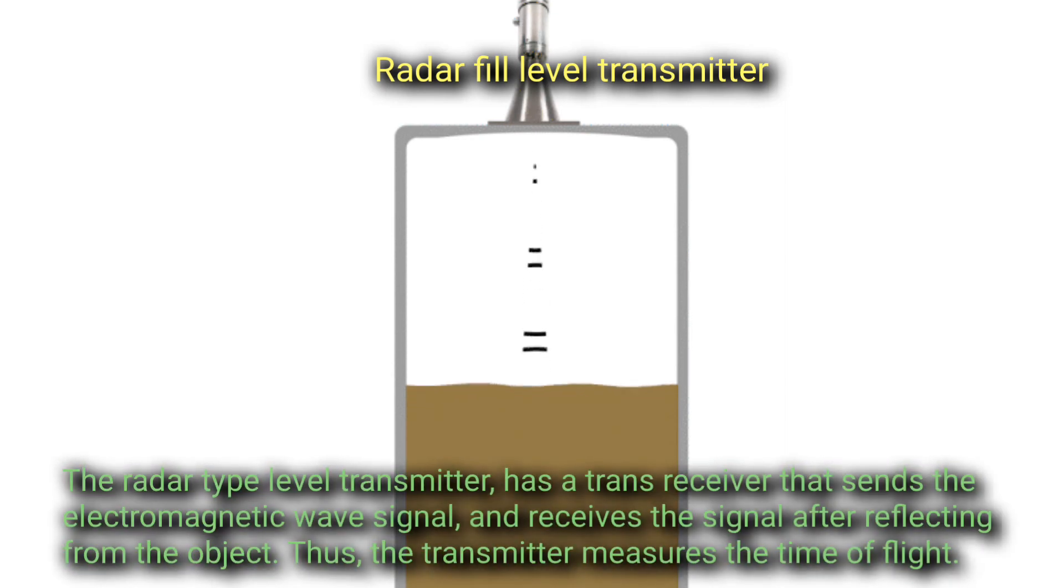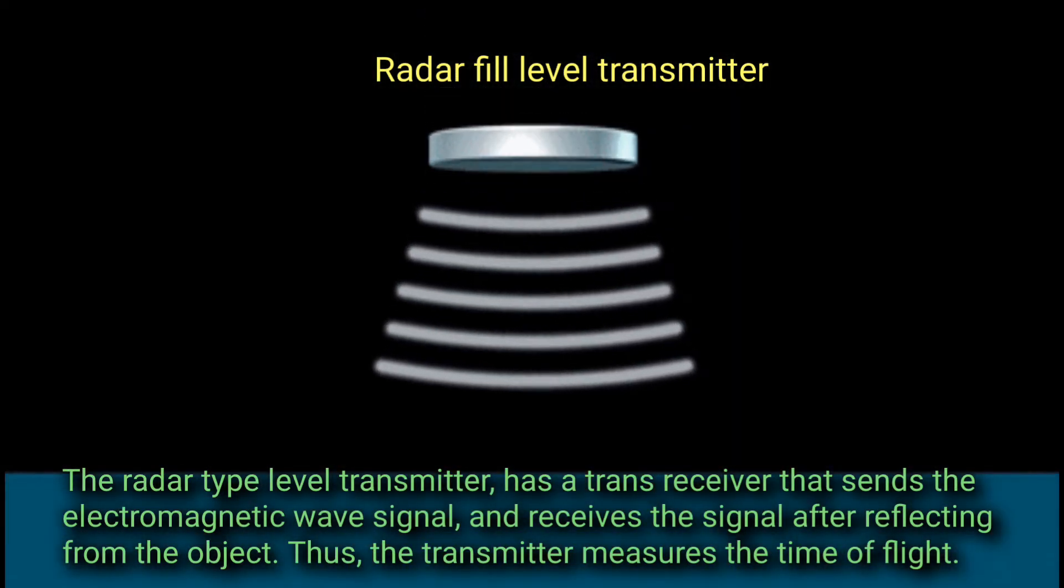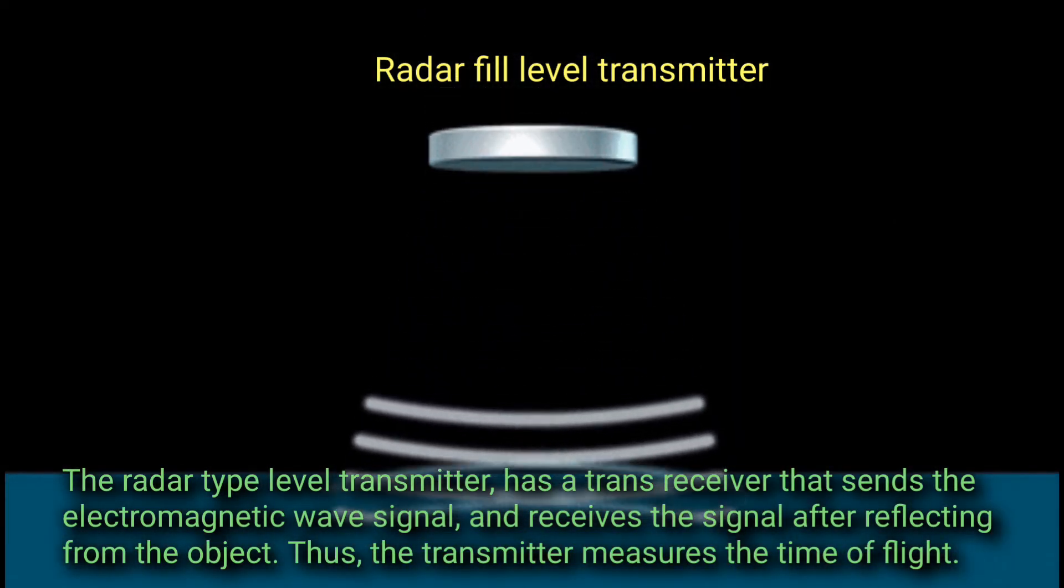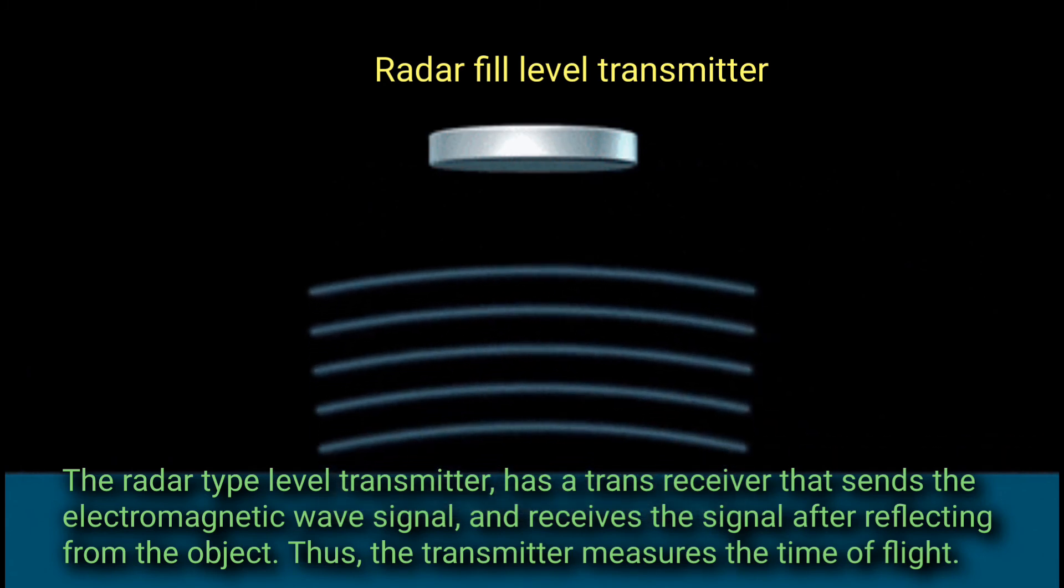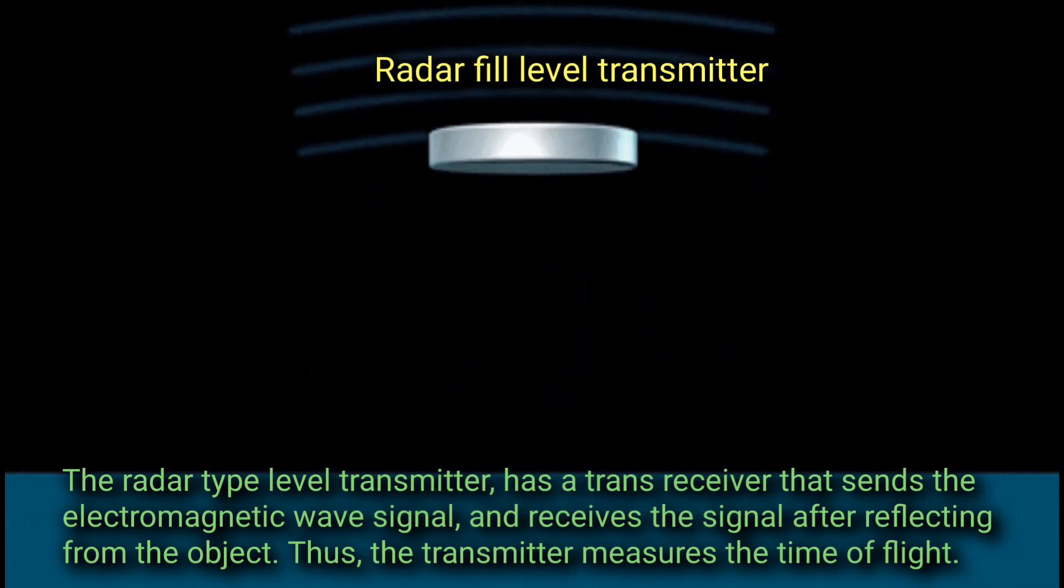The radar type level transmitter has a transceiver that sends the electromagnetic wave signal and receives the signal after reflecting from the object. Thus, the transmitter measures the time of flight.